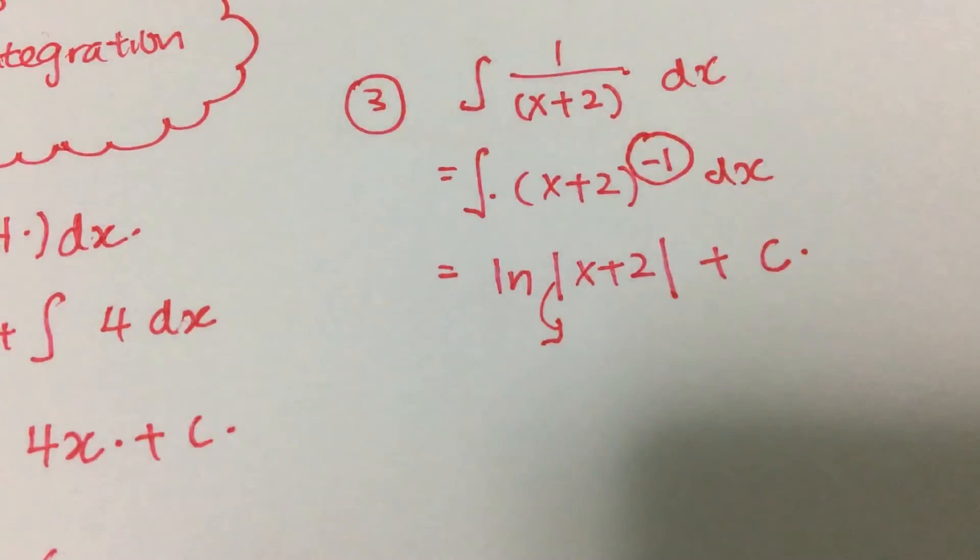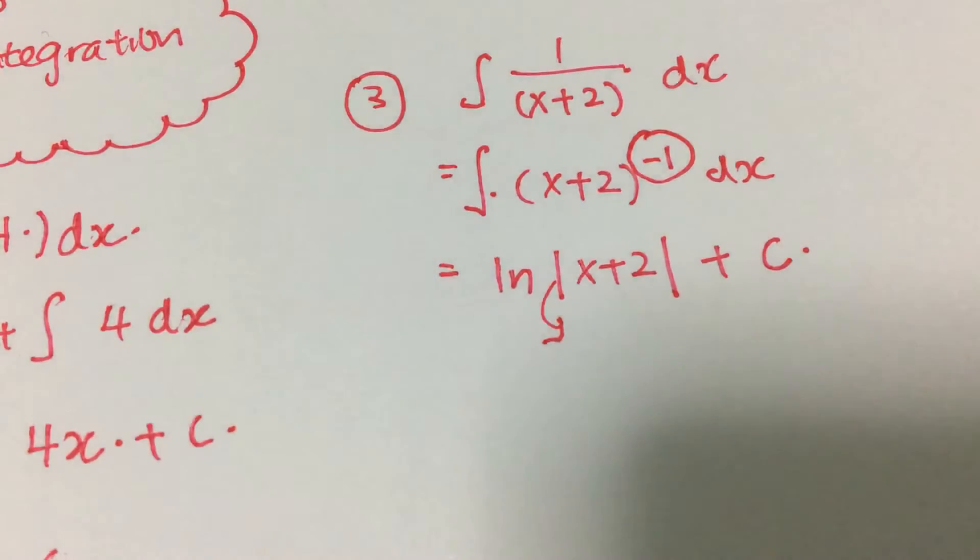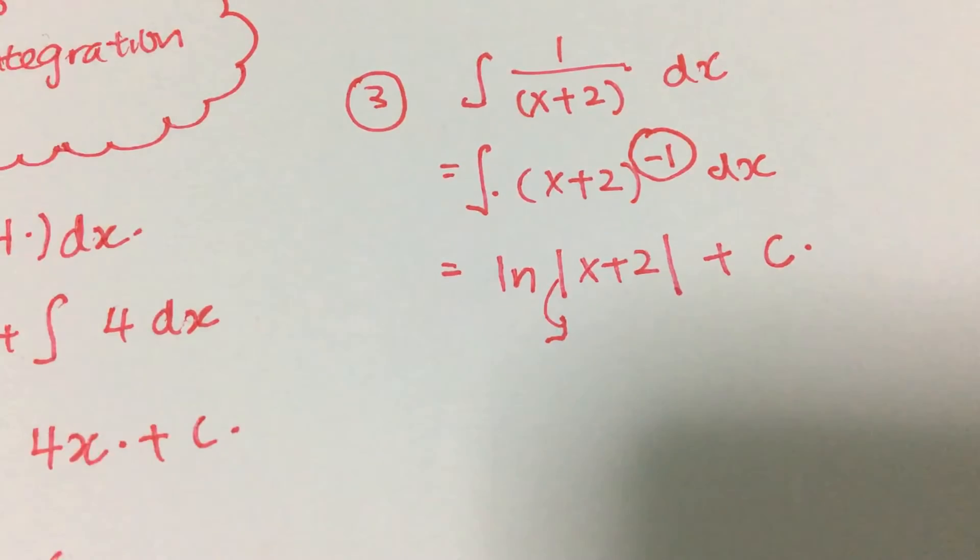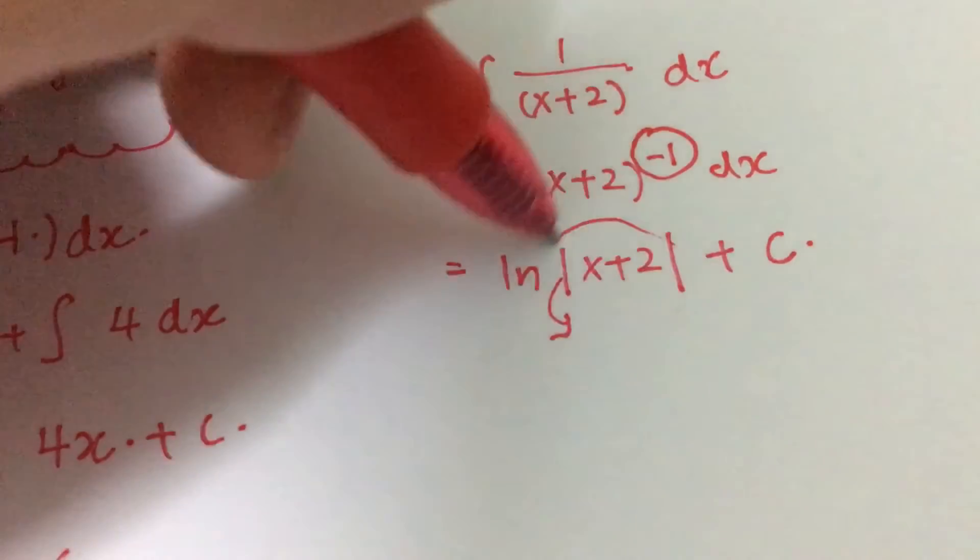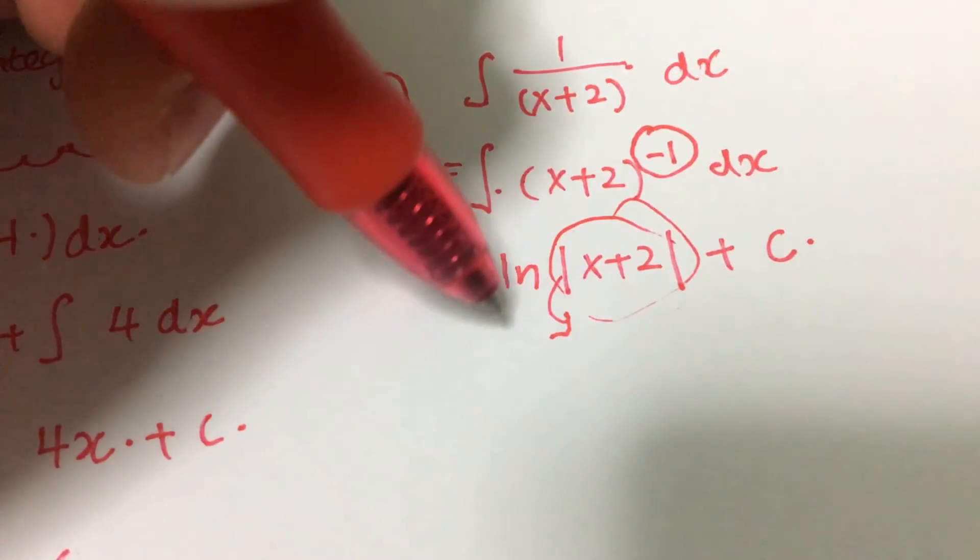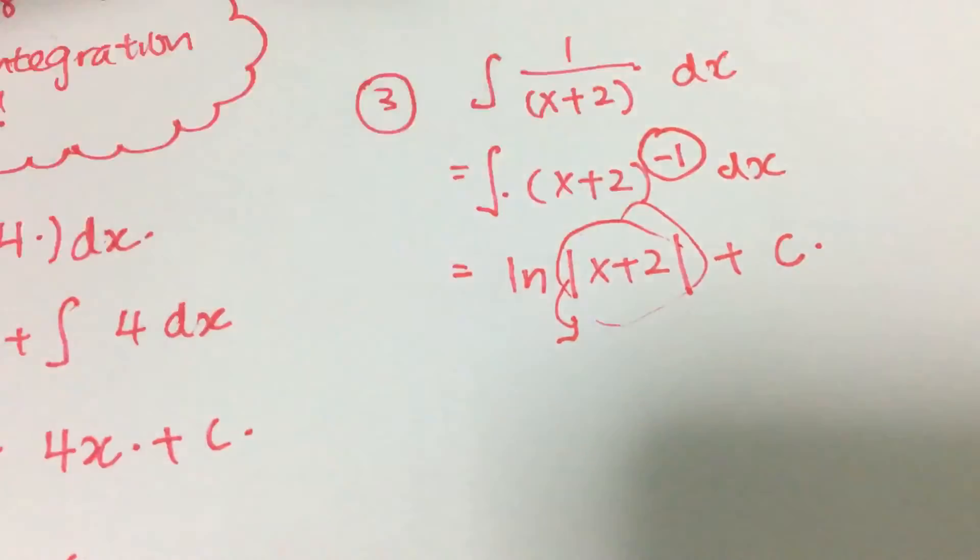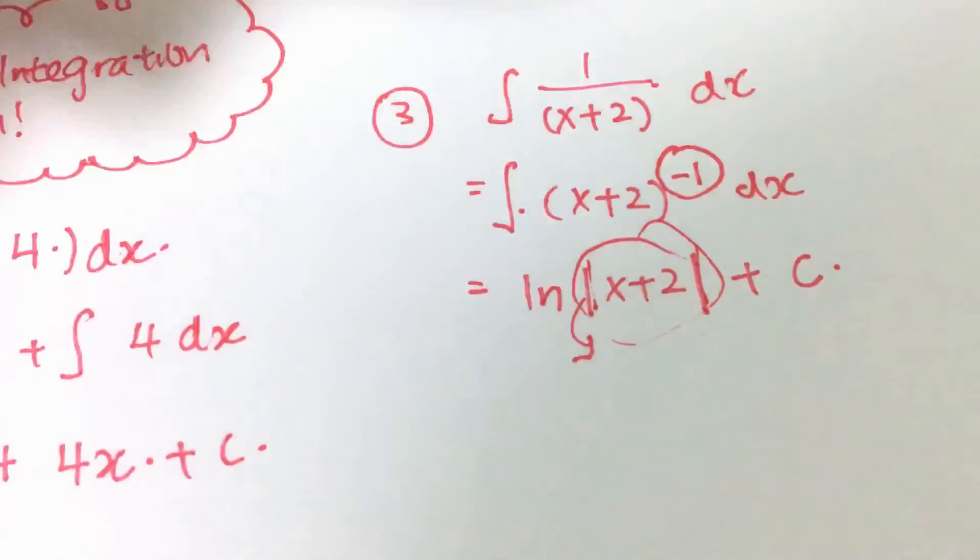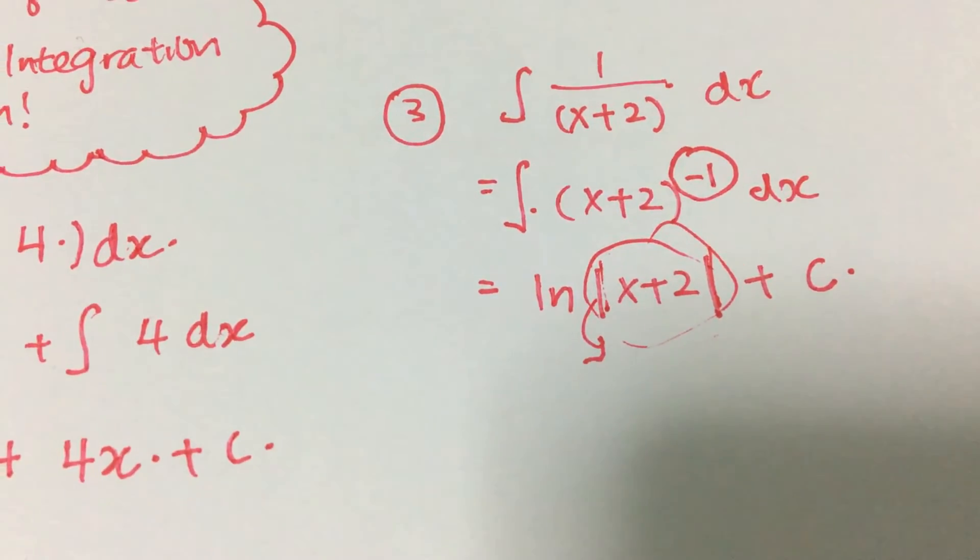Why is that absolute sign here? The absolute sign is because this whole chunk has to be positive in order for you to evaluate log. This whole thing has to be positive for us to be able to calculate the log. If it is negative, you will not be able to calculate log. That's why this absolute sign is important.